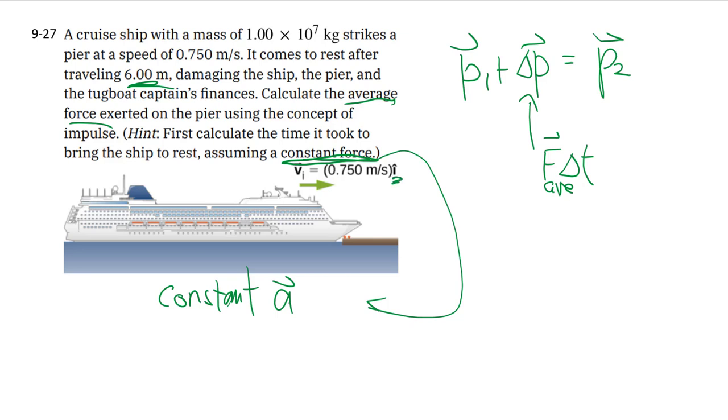They did give us a little i-hat here, so that implies positive x points that way. So if we look at the i-hat component, to find time, we might want to use that. But we don't know a, so let's find a first.